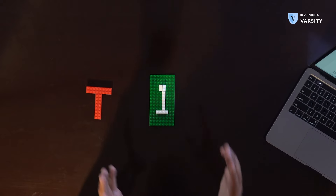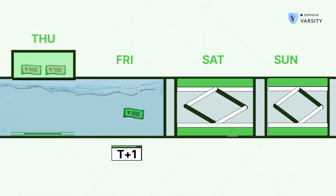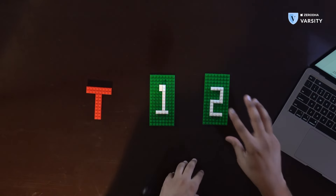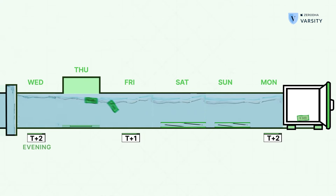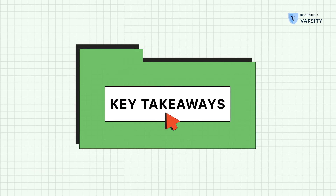Then we have T plus one, which in this case is Friday. Not much happens on this day as settlement is still in progress. On T plus two — since Saturday and Sunday are holidays, T plus two becomes Monday — we can withdraw the remaining 20%, which will be credited to our account on Monday. We can now withdraw the entire amount because the settlement is complete.